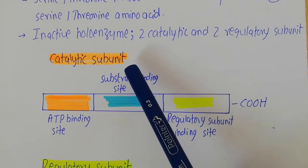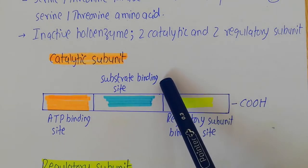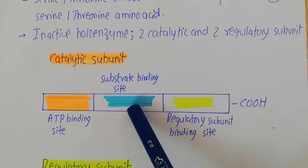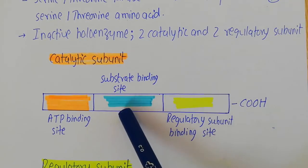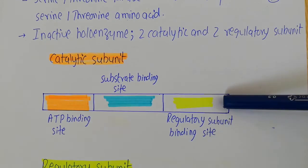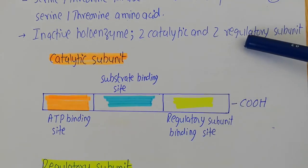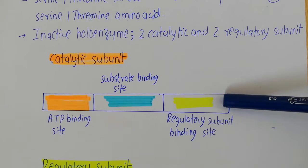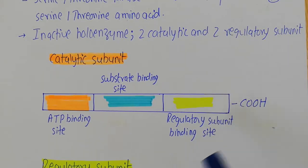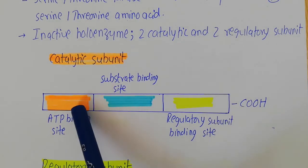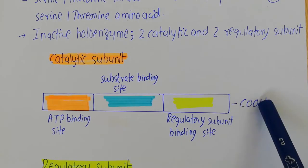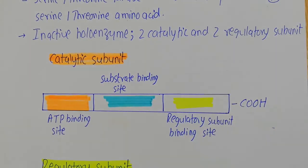Another important site in the catalytic subunit is the substrate binding site, which gives the catalytic subunit the ability to bind to its substrate protein so that specific amino acids can be phosphorylated. It also has the regulatory subunit binding site, where the regulatory subunits bind and regulate the activity of the catalytic subunit. So from N-terminal to C-terminal, the catalytic subunit has the ATP binding site, the substrate binding site, the regulatory subunit binding site, and then the C-terminal.